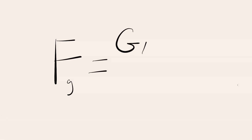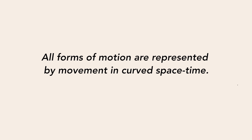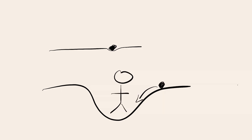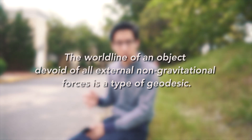Now, returning to Newton's law of gravitation — F equals GMm over r squared — in our situation, light is being bent in a gravitational field, but since photons are massless, one of our m values would be zero, rendering this equation useless for light. Einstein formulated a completely different idea: all forms of motion are represented by movement in curved spacetime. Imagine the fabric of spacetime — a light mass causes minimal effects, but a heavier mass literally warps spacetime and causes nearby objects to fall toward it. The object is moving along the shortest path in curved spacetime, and because we are dealing with a four-dimensional continuum, the path an object traces out is called a worldline. In general relativity, the worldline of an object devoid of external non-gravitational forces is a type of geodesic — simply the shortest path taken on a curved surface or sphere.